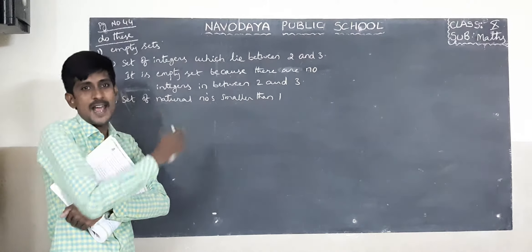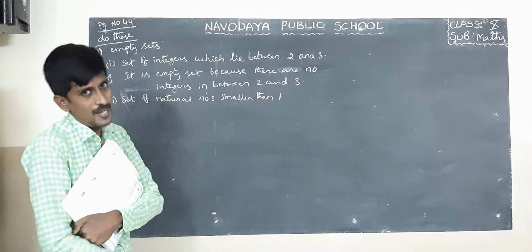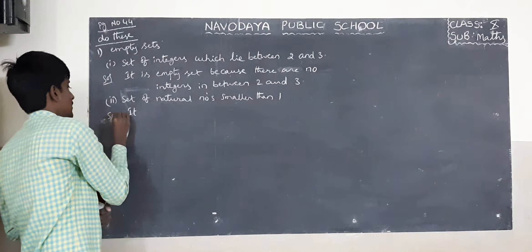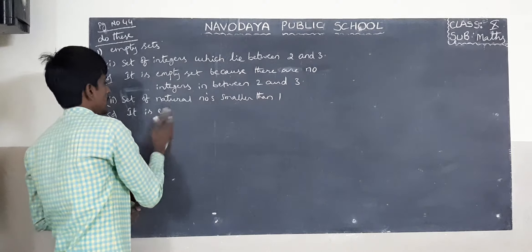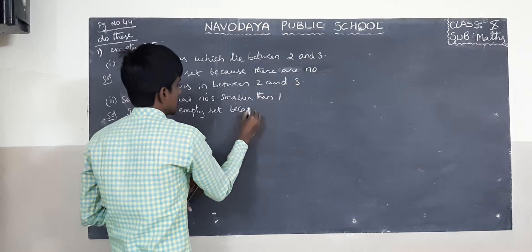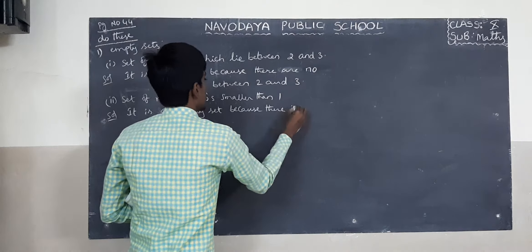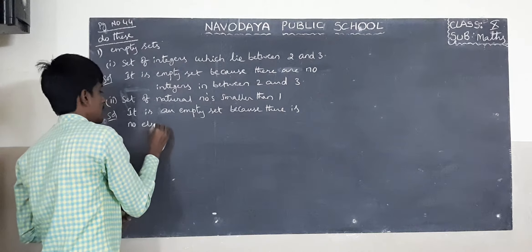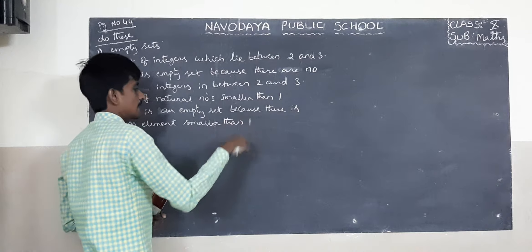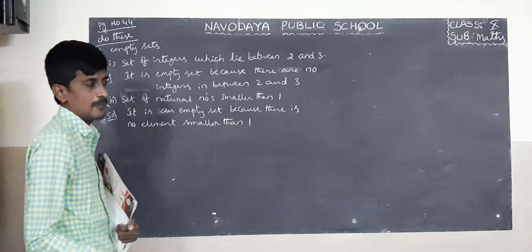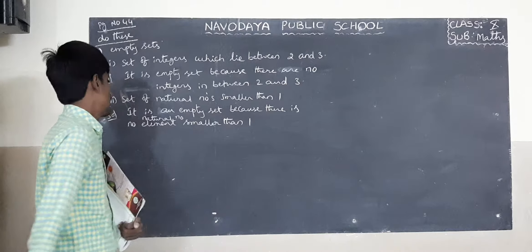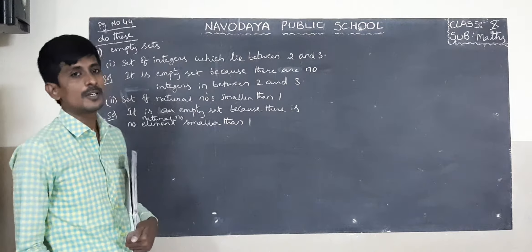Smaller than 1 means less than 1. There are no numbers. 1 is the smallest natural number. Smaller than 1 — there is no number. So it is also an empty set, because there is no element smaller than 1. There is no natural number smaller than 1, so it is also an empty set.